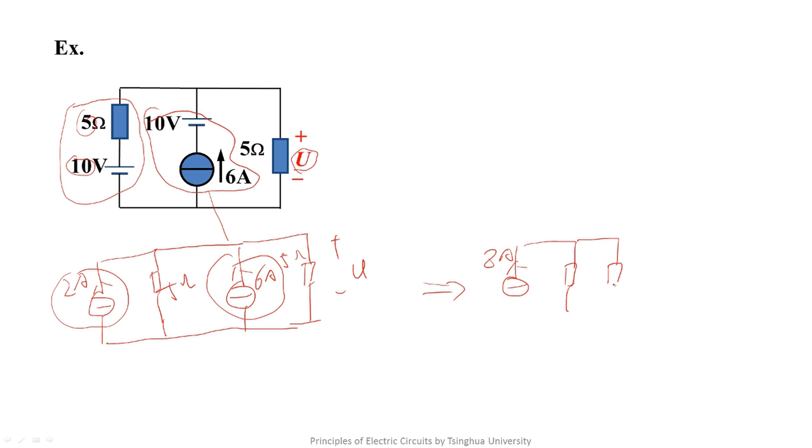Then, it becomes 8A supply power to 2 parallel 5 Ohm resistors. We need to find the U.